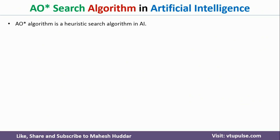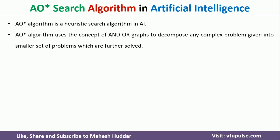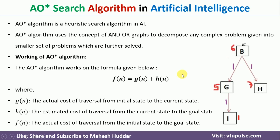AO* search algorithm is one of the heuristic search algorithms in Artificial Intelligence. In AO*, we divide a complex problem into smaller sub-problems and then solve those smaller problems so that we can solve the overall complex problem. In AO* algorithm, we use the equation: f(n) = g(n) + h(n), where g(n) is the actual cost to travel from the initial node to the nth node, and h(n) is the heuristic value — the estimated cost to reach from the nth node to the goal node.